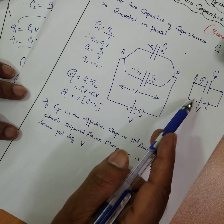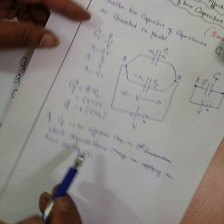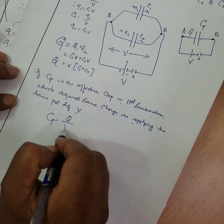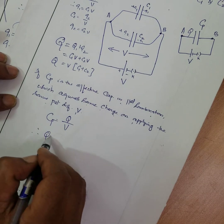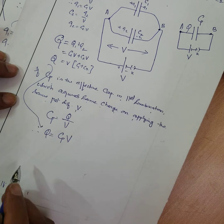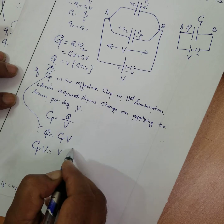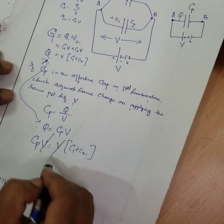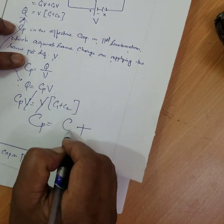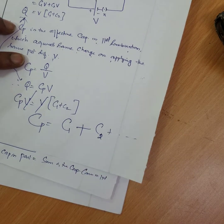If Cp is the effective capacitance of the combination which acquires the same charge at the same potential, then Cp equals Q by V, so Q equals Cp times V. Substituting, Cp times V equals V times the quantity C1 plus C2; V gets cancelled. Therefore, the effective capacitance in parallel is equal to the sum of the individual capacitances in parallel.